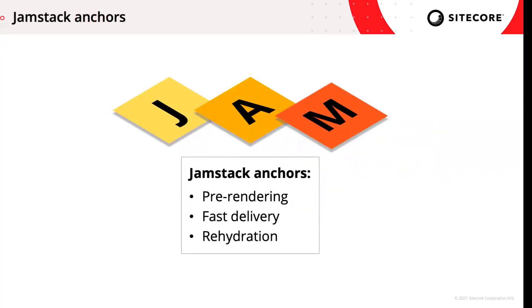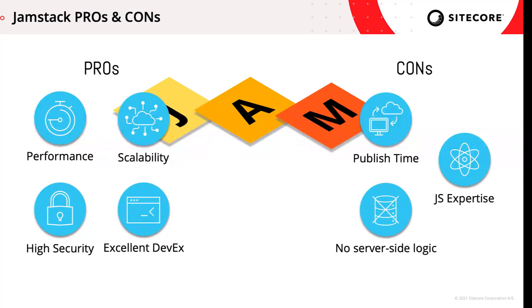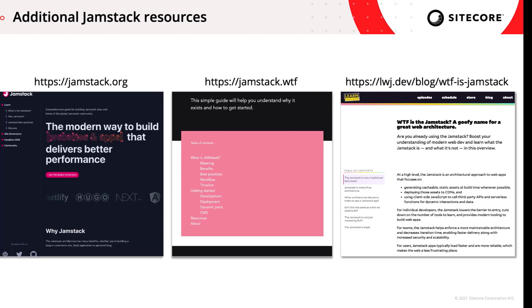So in summary, JAMstack is an architecture approach, not an actual technology stack. Anchors of JAMstack architecture are pre-rendering cacheable static assets at build time whenever possible, deploying those assets to CDNs for fast delivery, and keeping sites interactive by using client-side JavaScript to fetch data asynchronously and rehydrate the DOM. JAMstack apps are performant, scalable, and secure, and developers love working on them. The main trade-off is having to give up personalized, user-specific content. To learn more about JAMstack architecture, check out these sites. Thank you for watching. See you next time.